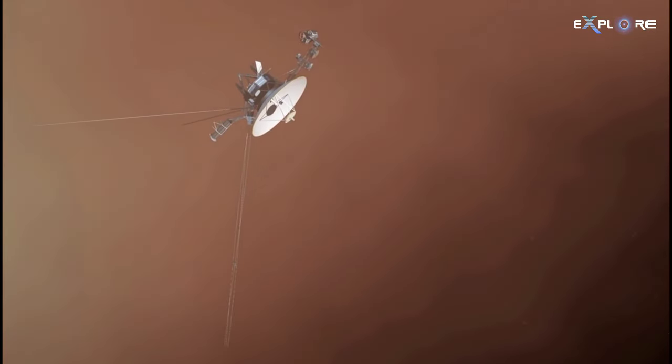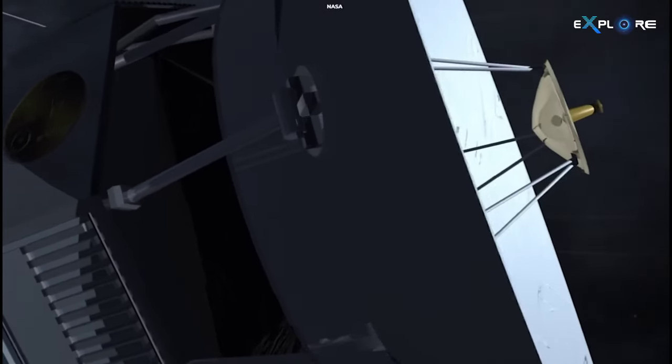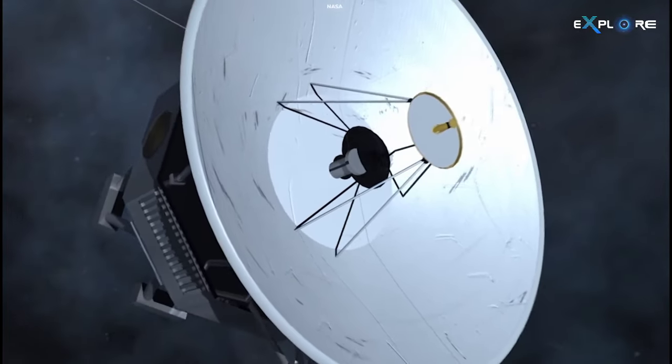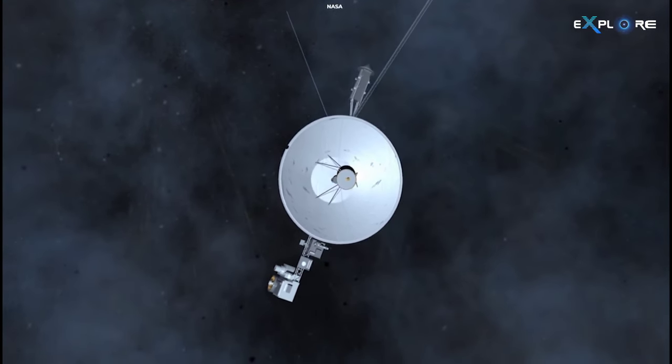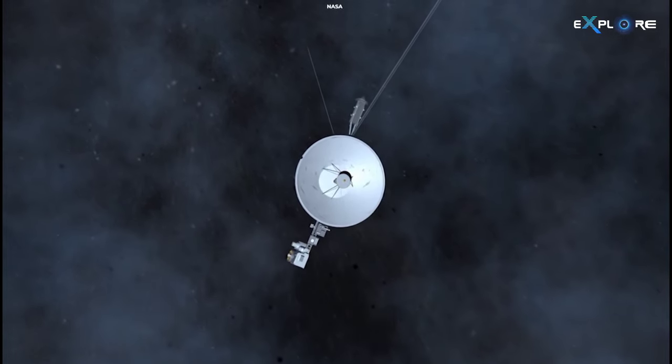This is not the first instance of Voyager 1 transmitting irregular data. In 2022, the probe sent back some of its data through a malfunctioning onboard computer, resulting in corrupted outgoing messages. NASA engineers successfully identified and resolved the issue, but the process took several months.